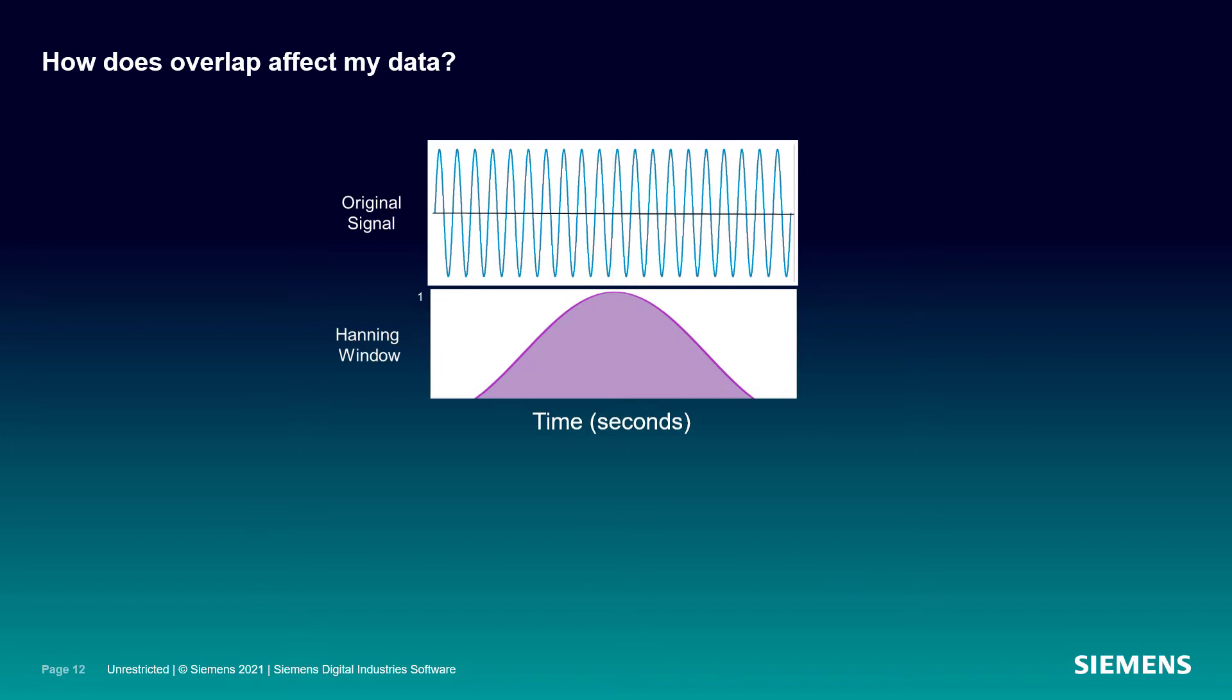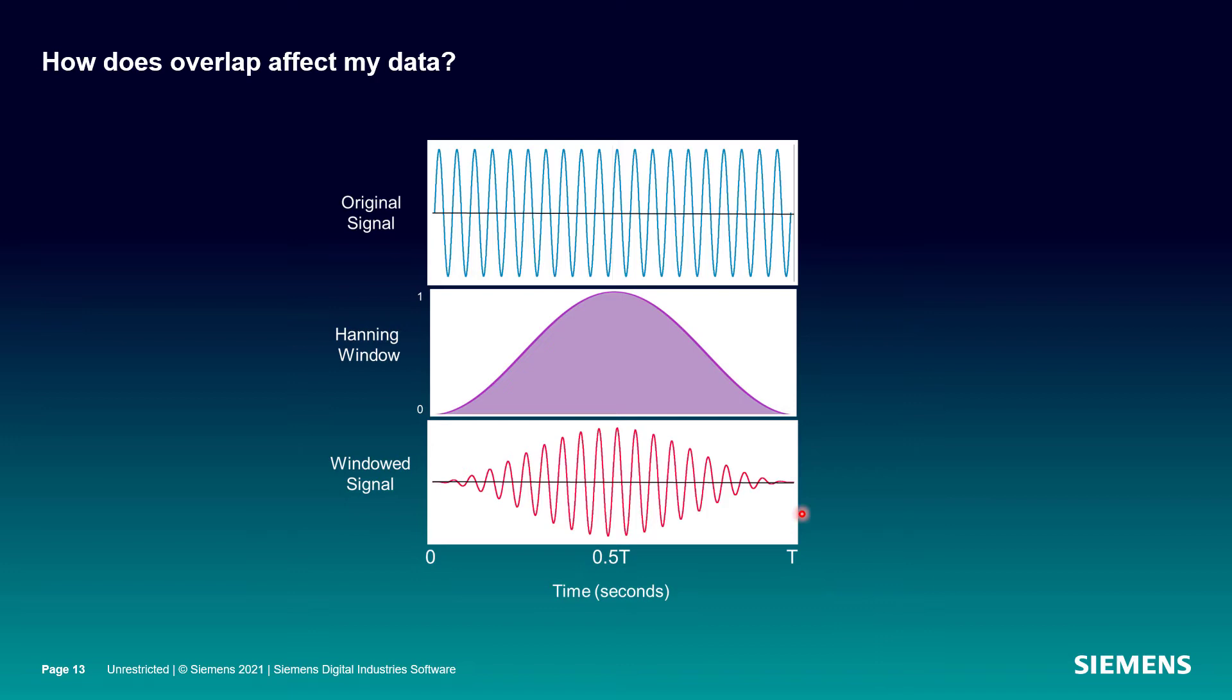So we have our original signal, we multiply it by a Hanning window and we end up with this windowed signal. And this is the actual signal that the FFT is performed on. And you see, there are portions of the signal that are not present in what we actually performed the FFT on. We need to keep that in mind, particularly if we're going to take multiple averages and we don't overlap.